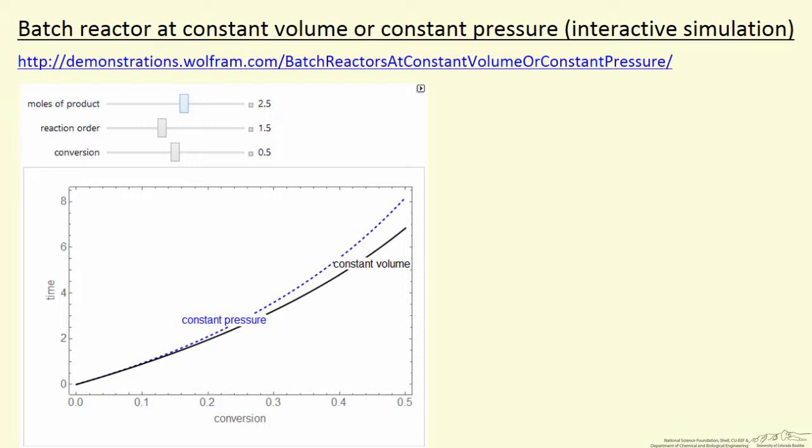In other words, one mole of A goes to 2.5 moles of B. That's going to affect how much difference there is between the constant volume and the constant pressure because as more moles form, and the constant pressure reactor expands more, the concentration decreases.